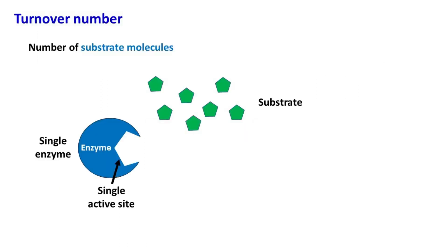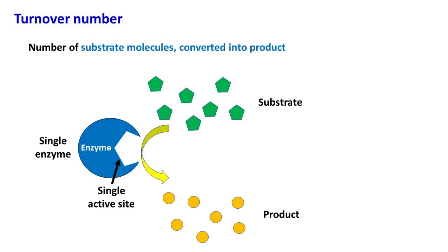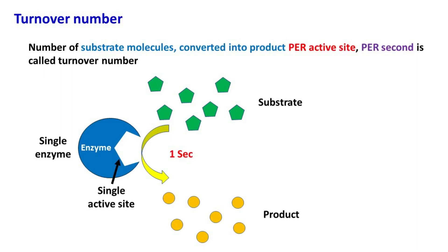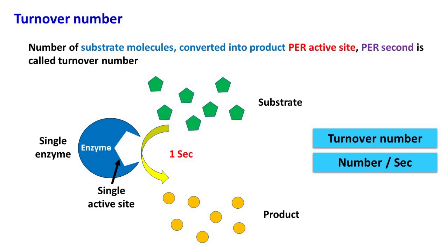Next is turnover number. Turnover number is defined as the number of substrate molecules converted into product per active site per second. Hence, turnover number will have units of number per second.